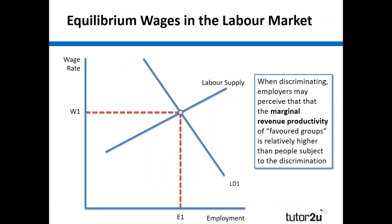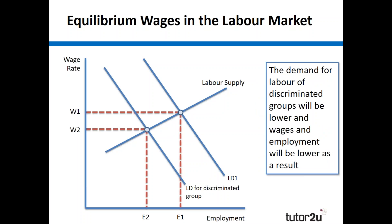When we think about how wages are determined we use the demand and supply curves — where they cross, that's our wage determination point. If we're going to illustrate where discrimination may occur, we use that same diagram but illustrate it at a different point. The theory suggests that employers consider the marginal revenue productivity of favoured groups to be relatively high — their ability to bring in a higher level of marginal revenue is greater — and therefore the demand for the discriminated group will be at a different point, illustrating lower wages and lower levels of employment.